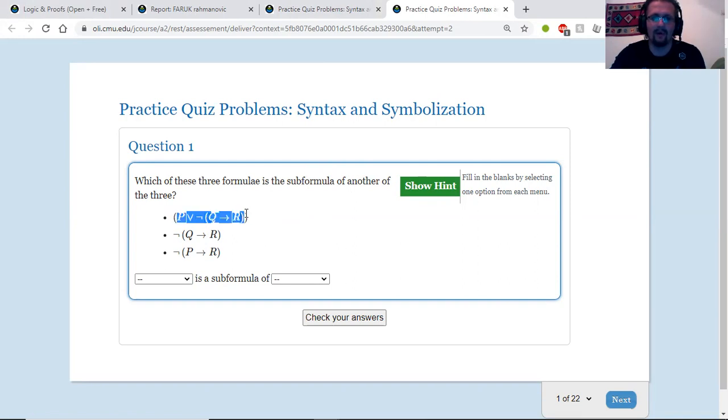So the longest formula, that's more or less your whole formula, generally speaking, is this p or not q then r. So we have the not q then r. We can see that that's part of the original formula as well, right here.